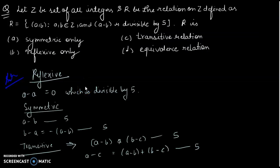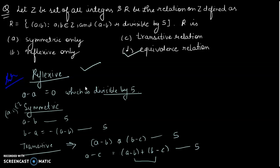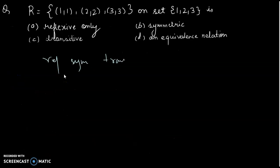Now for A-B divisible by 5: for reflexive, A - A = 0, which is divisible by 5 — so it is reflexive. For symmetric, if A - B is divisible by 5 then -(A - B) = B - A is also divisible by 5 — so it's symmetric. For transitive, if A - B and B - C are both divisible by 5, then A - C = (A - B) + (B - C) is also divisible by 5. So the answer is equivalence relation.